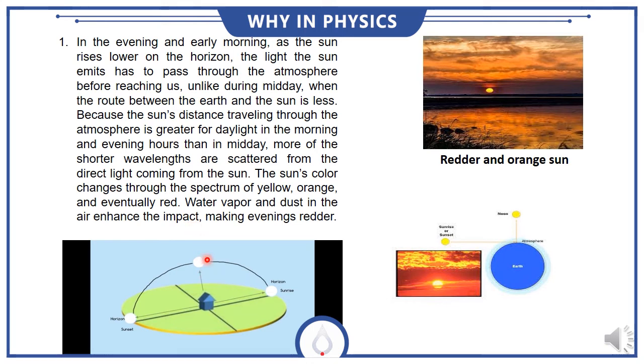The shorter wavelength particles are scattered away, while the longer wavelengths like red, yellow, and orange remain visible.